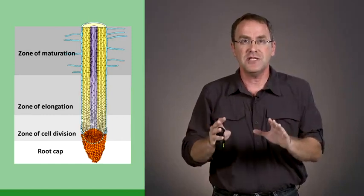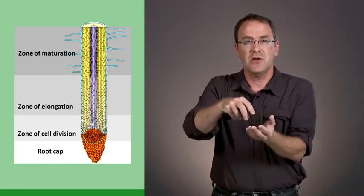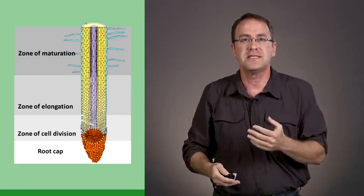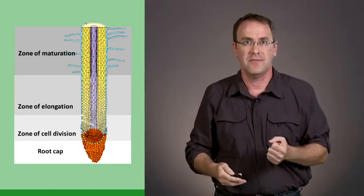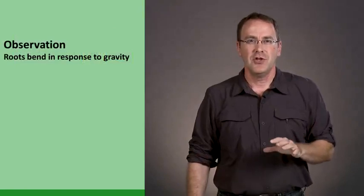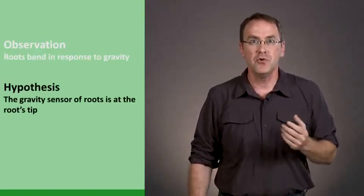Just to review this, from the bottom up we have the root cap, we have the meristem which are the dividing cells, we have an area of cells that elongate, and then the area where the cells mature. Now let's go back to Darwin's experiment. Darwin was interested in understanding where is the gravity sensor of roots.